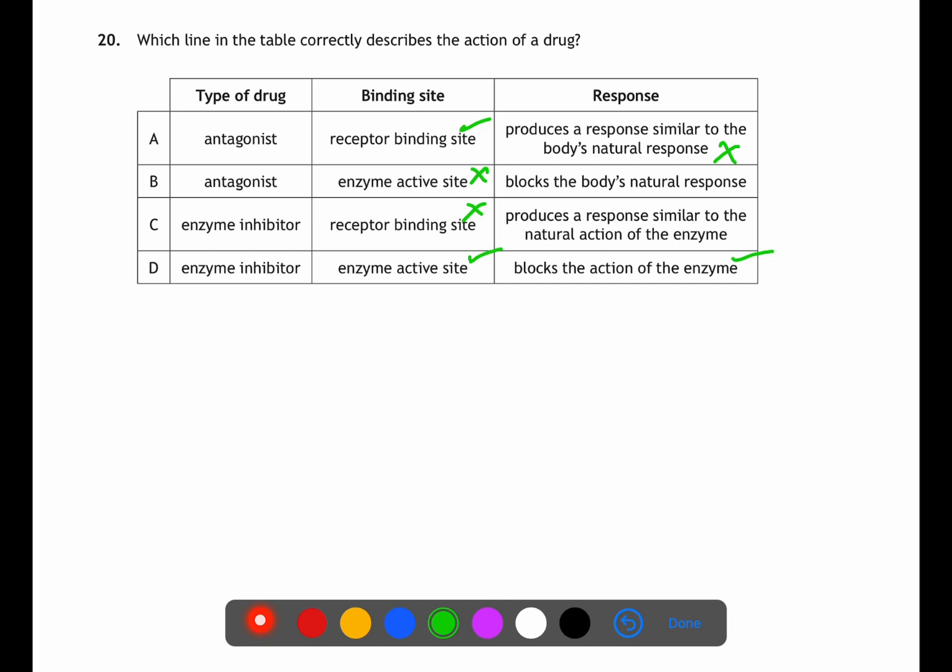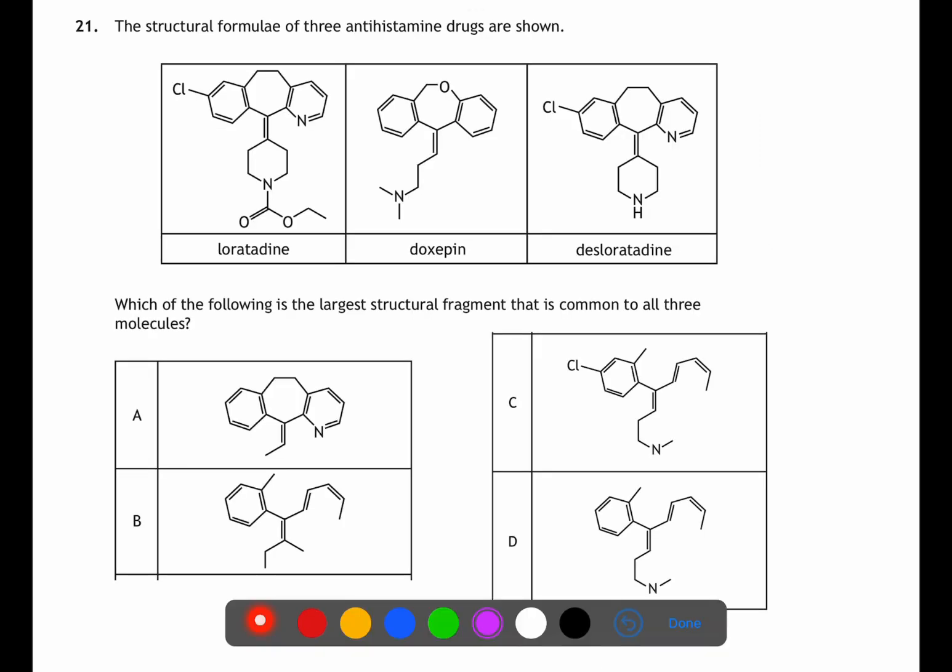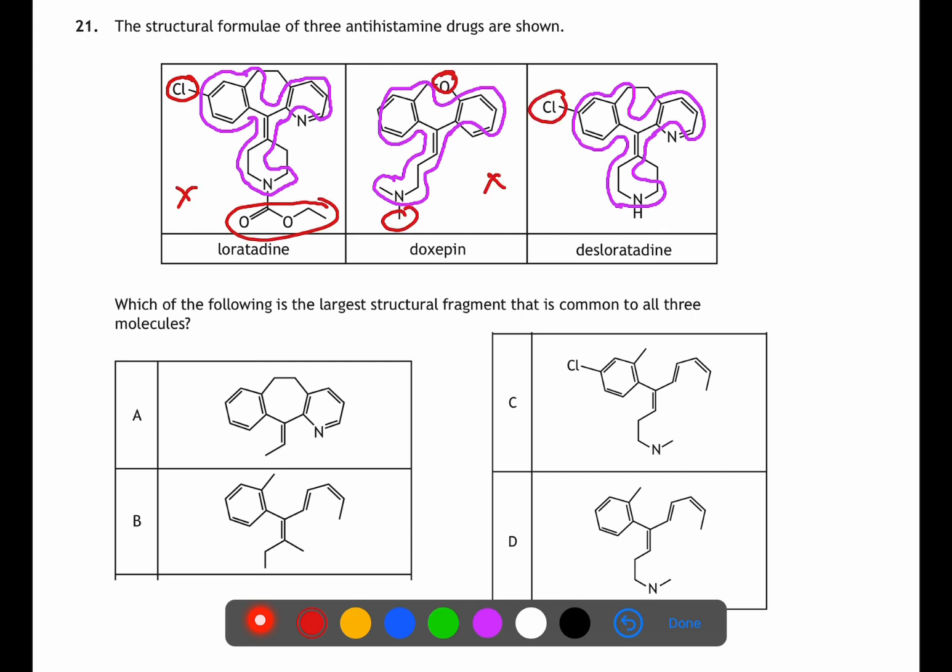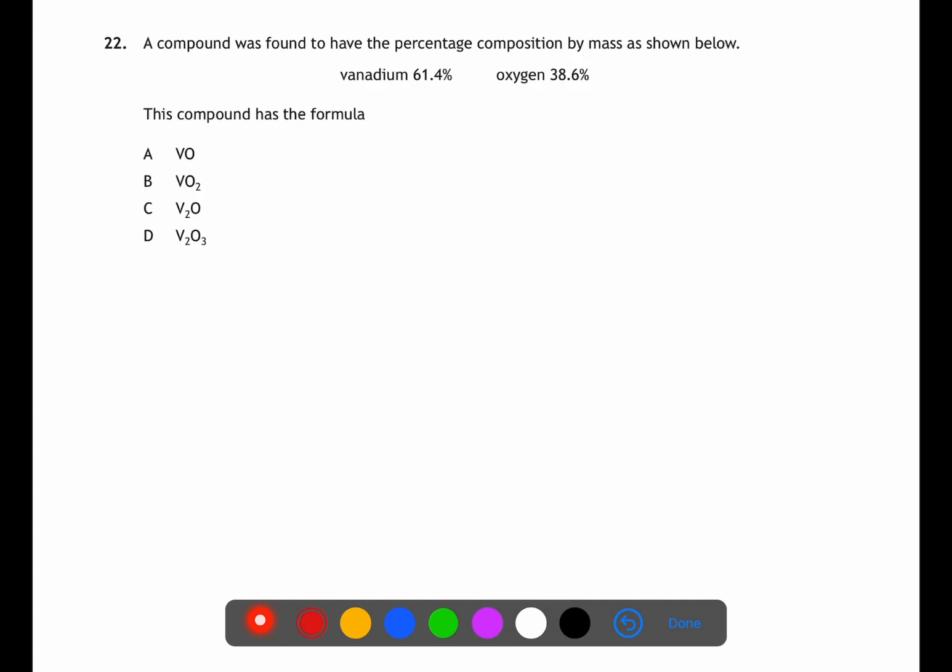Question 21 is looking at the structure of molecules which is responsible for pharmaceutical action. Here we have three antihistamine drugs. We want to find the structure of the part of the molecule which is common to all three. I'm going to outline this part in pink. There are different parts to each of these drugs which are not common and these parts I'm going to outline in red. Now we can have a look at the answers. If any of the answers contain the sections which are in red, those are not part of the largest structural fragment which is common to all of them. D has the same structural fragment that I have highlighted in pink.